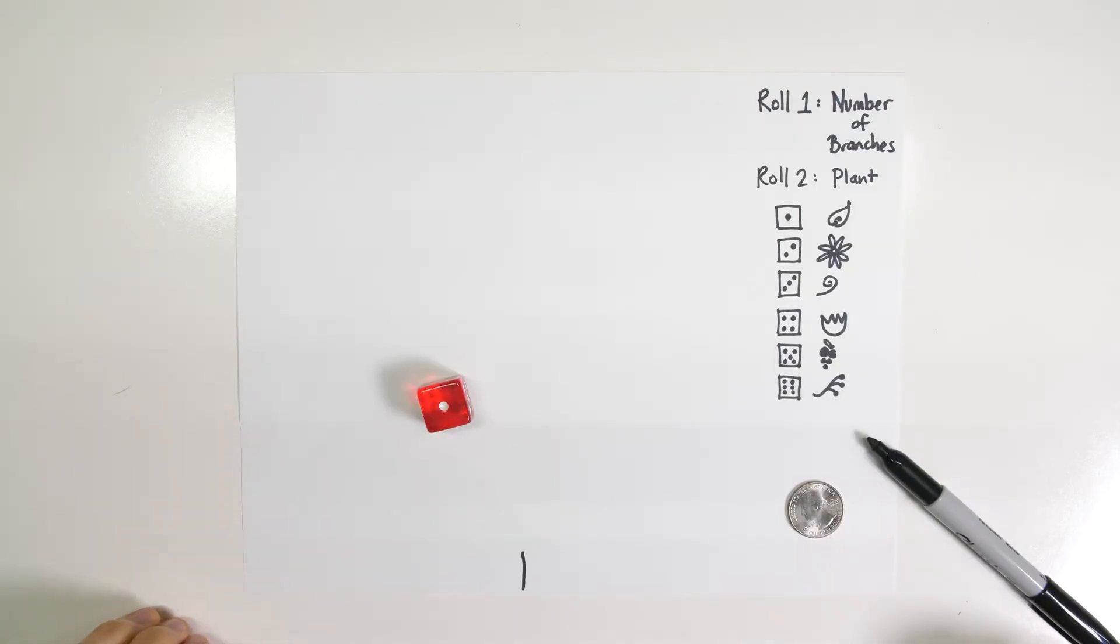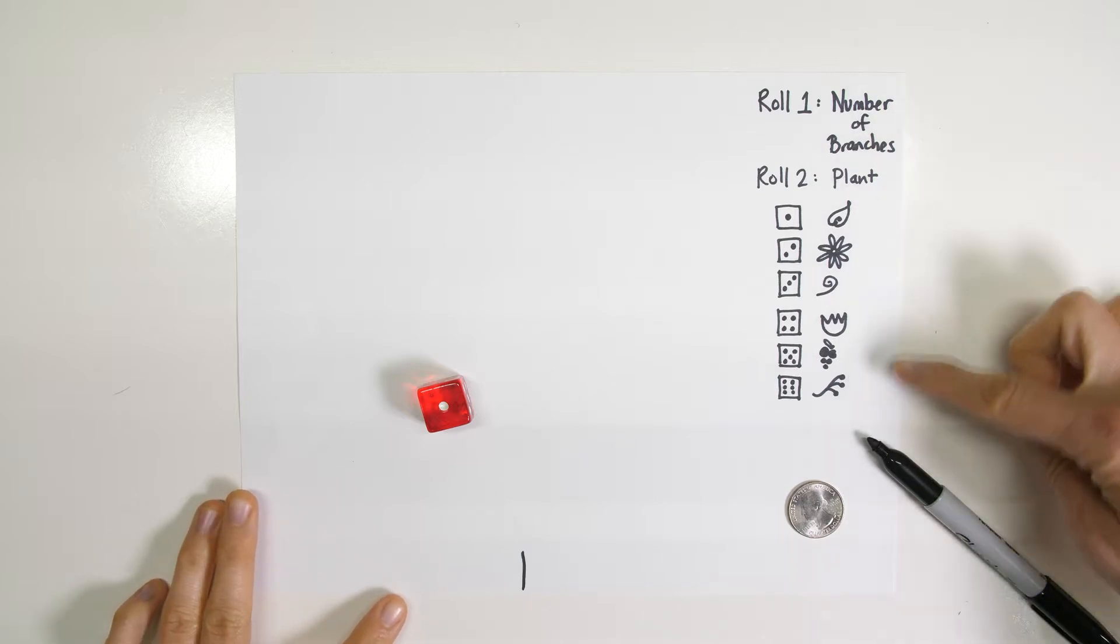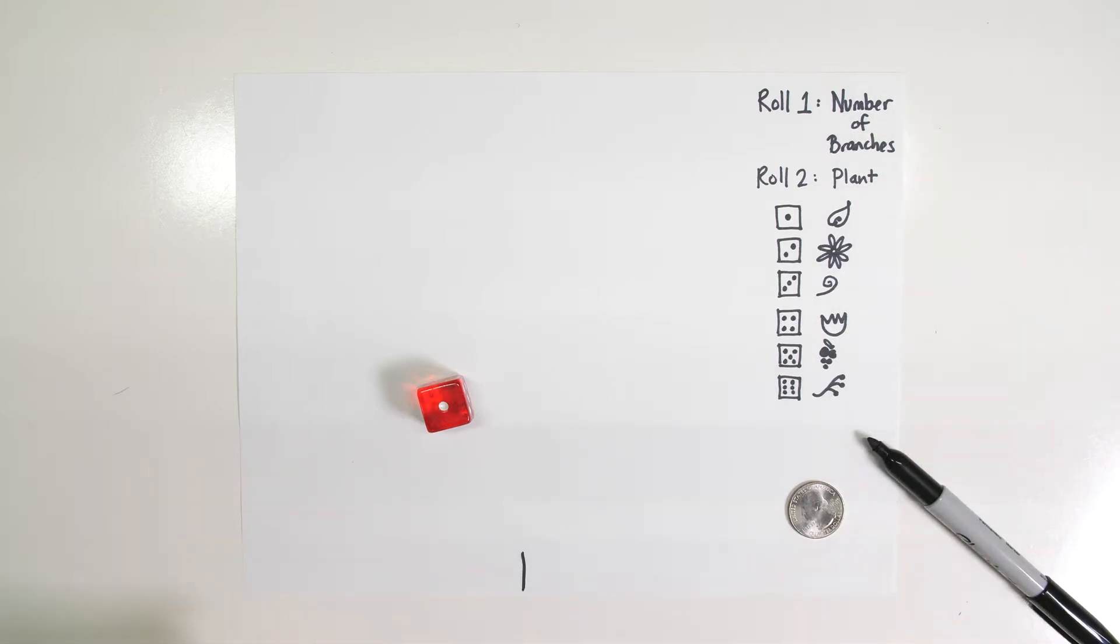Let's create a plant using probability. In order to do this, you want to start by setting yourself some rules.